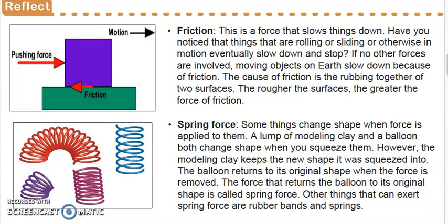Friction is a force that slows things down. Have you ever noticed that things that are rolling, sliding, or otherwise in motion eventually slow down and stop? If no other forces are involved, moving objects on Earth slow down because of friction. The cause of friction is the rubbing together of two surfaces. The rougher the surfaces, the greater the force of friction.